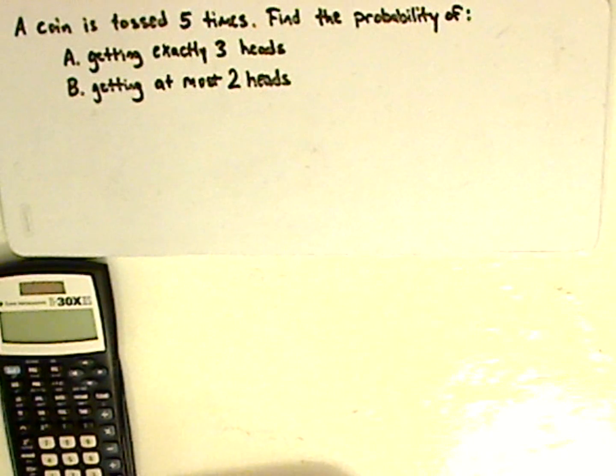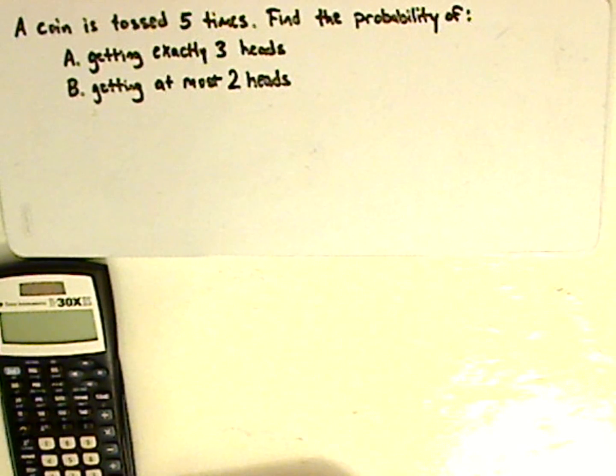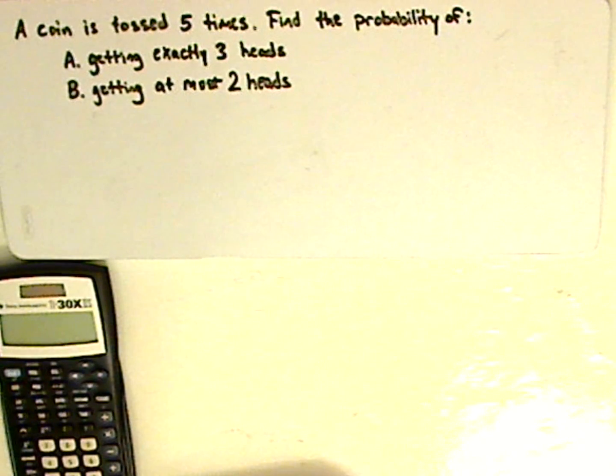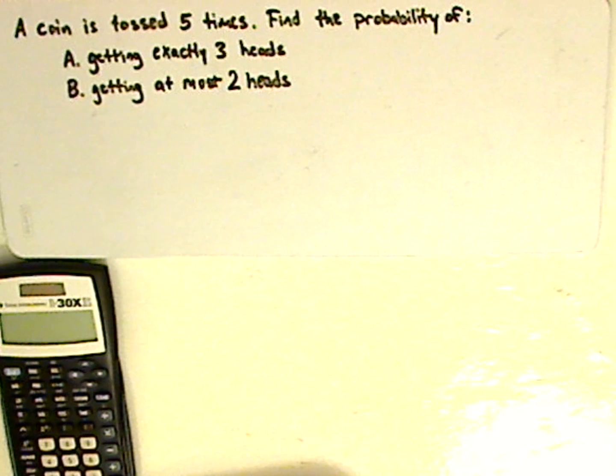Hi, I'm JD and here's the problem. A coin is tossed five times. Find the probability of getting exactly three heads and then find the probability of getting at most two heads. So pause the video and see if you can try this one on your own.